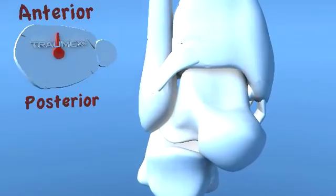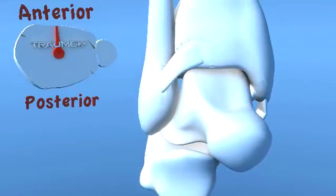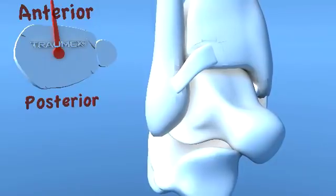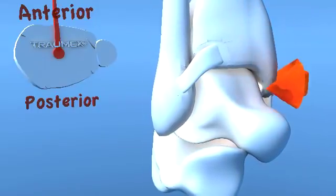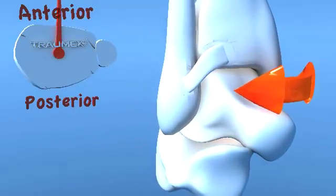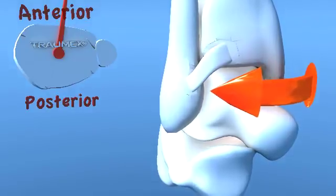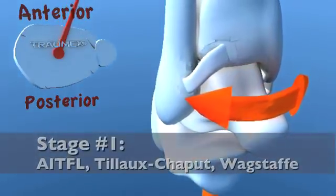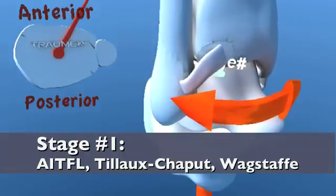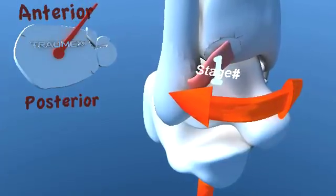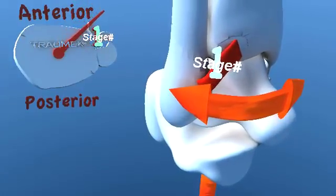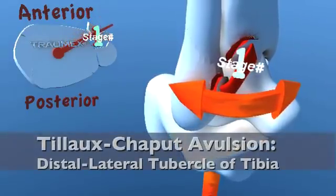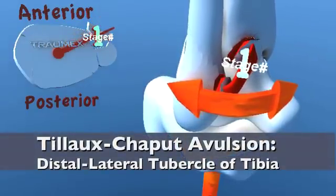With the foot in a fixed supinated position, the forces start along the lateral axis of the fibula. The leg undergoes internal rotation, creating tension on the anterior inferior tibial fibular ligament. In a stage 1 injury, one of two pathologies may occur: rupture of the anterior inferior tibial fibular ligament, or a fracture of the distal lateral tibia, also known as a Tillaux fracture.